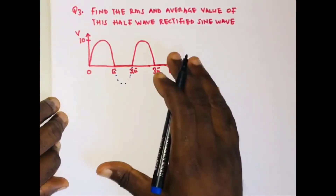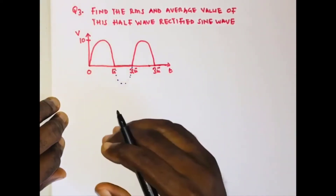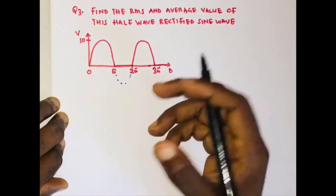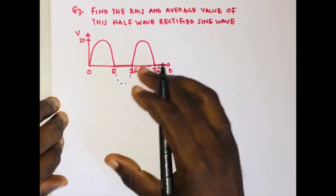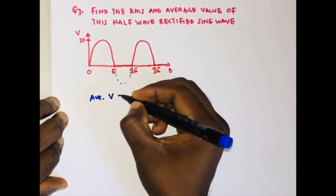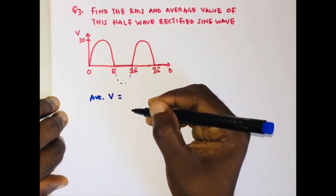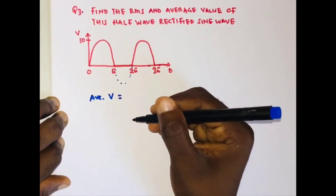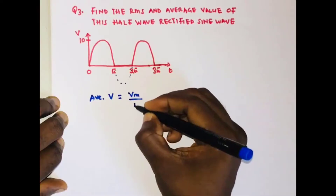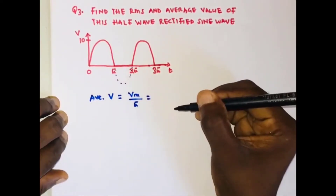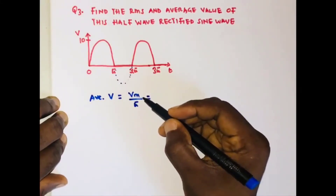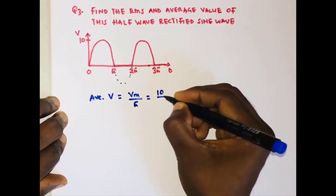For this particular waveform, to find the average and RMS values, we are not going to use the method from the first two questions. To find the average value of a half-wave rectified sine wave, the formula is the peak value divided by π. So the average value is Vm divided by π, which is 10 divided by π.